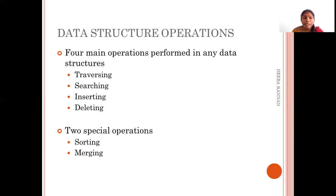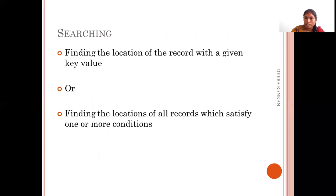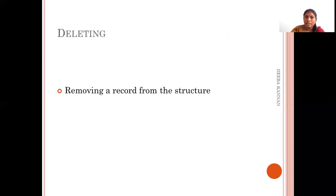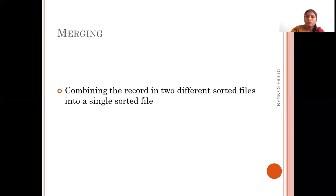When combining data, the location also matters, so we have to perform these operations carefully. To summarize: traversal is accessing each and every record only once; searching is finding a record and returning either its key value or position; insertion is adding a new record; deletion is removing an existing record; sorting is arranging records in a logical order; and merging is combining two files together.